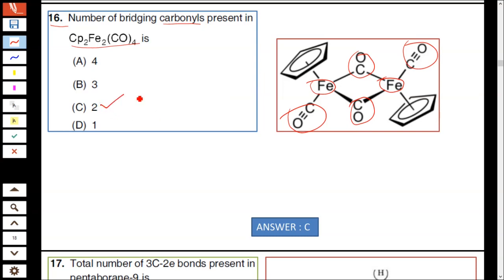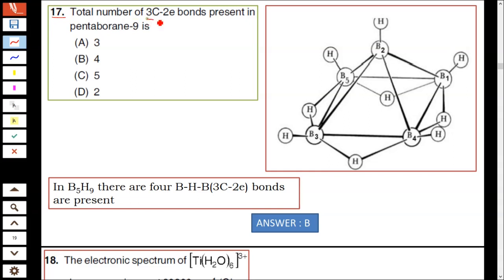There are two bridging carbonyls, hence the answer is C. Question number 17: Total number of 3C-2e bonds present in pentaborane-9, that is B₅H₉.